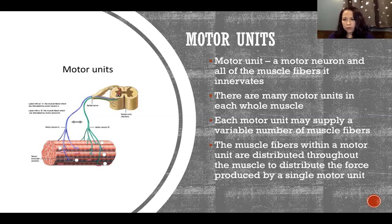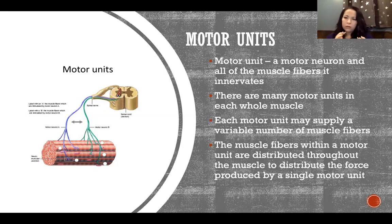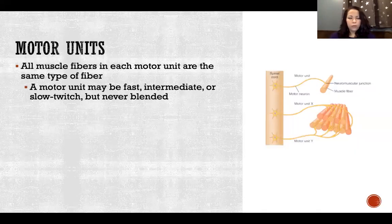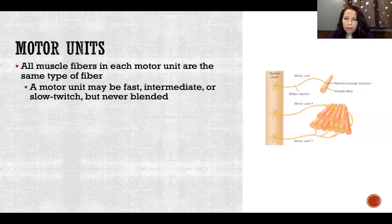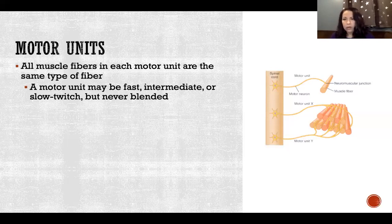All of the fibers that are part of one motor unit — supplied by the same neuron — are scattered throughout the whole muscle. So if we activate one motor unit, we get a distributed, low-level force across that muscle rather than just one little part contracting. All muscle fibers in each motor unit are the same type — type 1, type 2a, or type 2b — because the type of fiber is determined by the neurological input from the neuron controlling it.